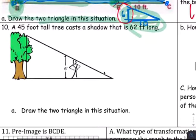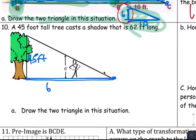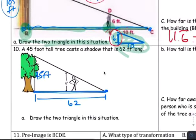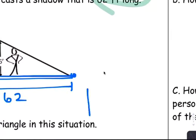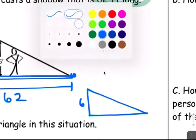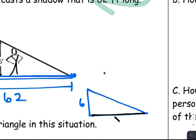And then number 10. Number 10 is a 45-foot tree. Cast a shadow that is 62 feet long. So its shadow is right from here to here to the end. So that's 62. So they'll put it like this so you don't get confused from end to end, 62. Draw the two triangles in this situation. So the little triangle, if you look at the little guy, the 62 doesn't belong to him. So we've got 6 here. We don't know what his shadow is. His shadow is here. We don't know what that is. We give it X.